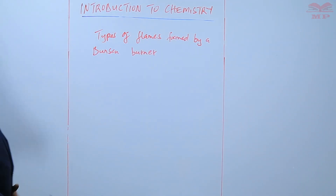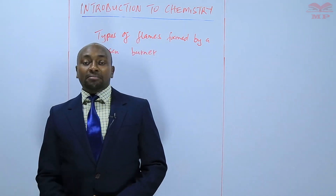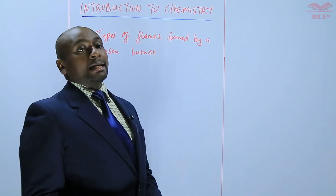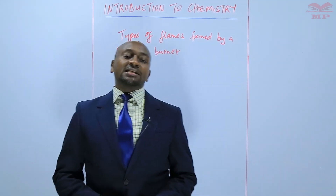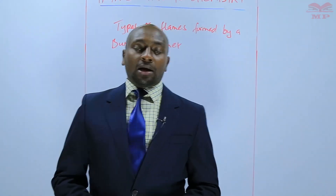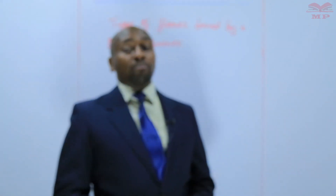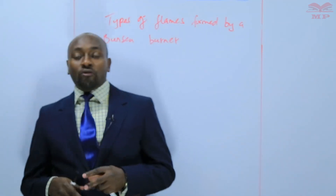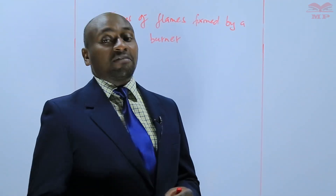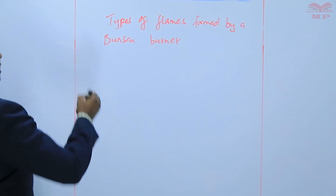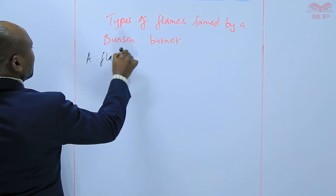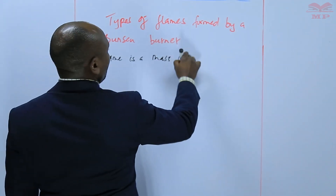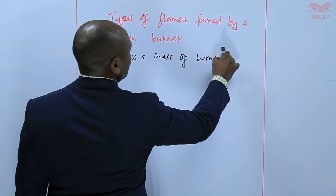First of all, before we look at the types of flames formed by a Bunsen burner, it's important to define what a flame is. We say that a flame is a mass of burning gases. So when there is a mass of burning gases, we have a flame.